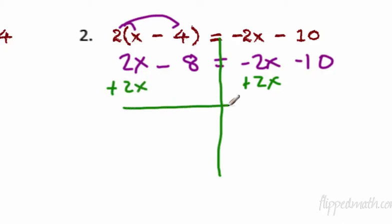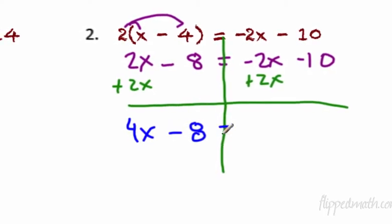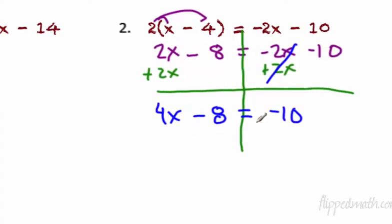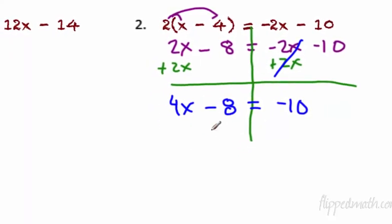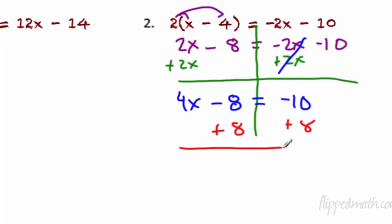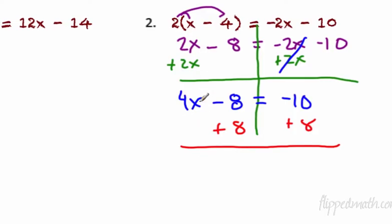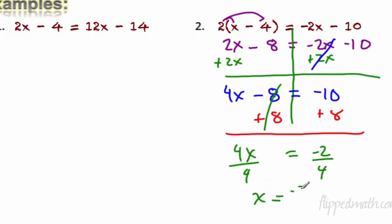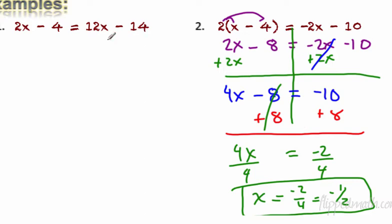Now we look at the equation. I have a 2x and a negative 2x. The smaller one is negative 2x, so the opposite is we add 2x to each side: plus 2x, plus 2x. Draw the big line. Read left to right: 2x plus 2x is 4x. Minus 8 hangs out. Negative 2x plus 2x cancels, and we have negative 10 — don't forget the negative. Now we have a two-step equation: add 8 to each side. 4x, negative 8 and positive 8 cancel, equals negative 10 plus 8, which is negative 2. Divide each side by 4, and we get x equals negative one-half. That's okay — we'll have fractional answers sometimes.